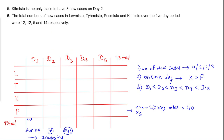Statement 5 says K is the only place to have 3 new cases on day 2. On day 2, K has 3 new cases and at all other places the number of new cases is not going to be 3. Then the total number of new cases over 5 days: in L the total is 12, in T the total is 12, in P the total is 5, and in K the total is 14.